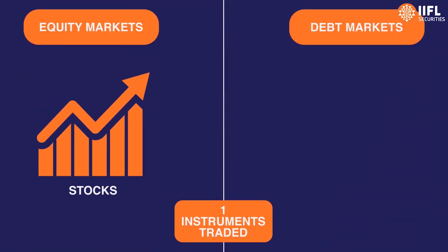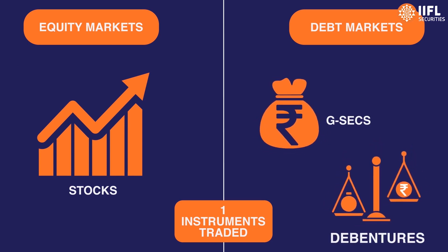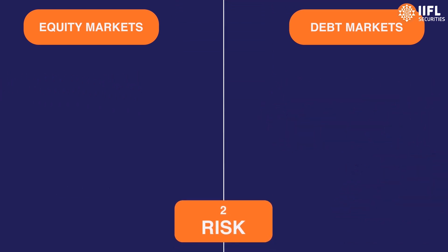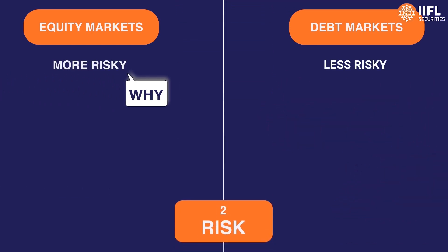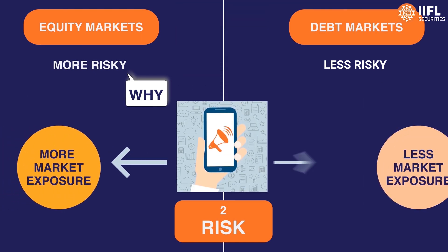Number one: Instruments. Equity markets mein shares trade hoote hain, jabki debt markets mein loan-based instruments trade hoote hain, like G-secs and debentures. Number two: Risk. Equity markets debt markets se zyada risky hoote hain, kyunki stocks jaise instruments ka market exposure loan-based instruments se zyada hota hai.